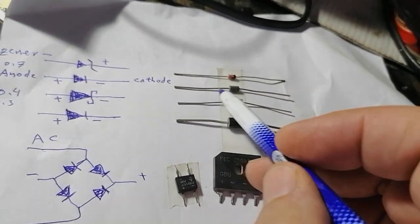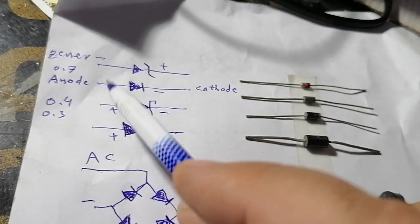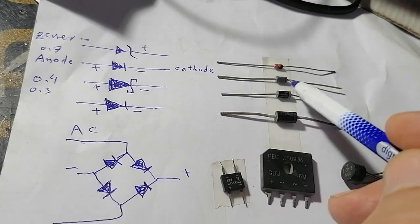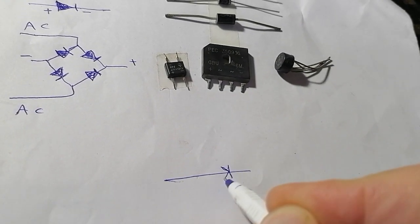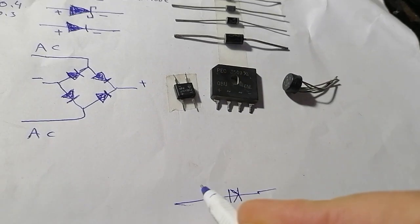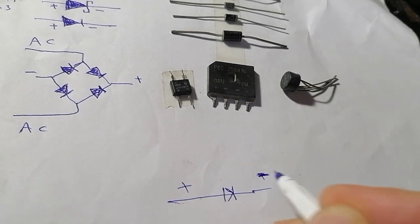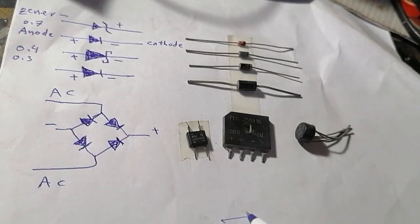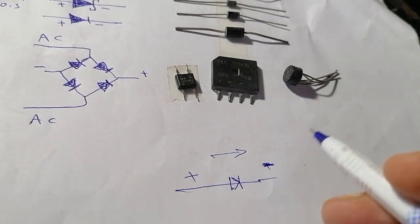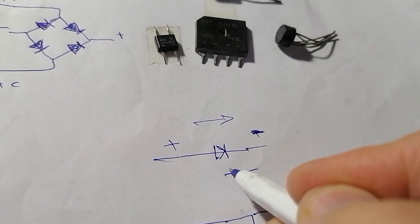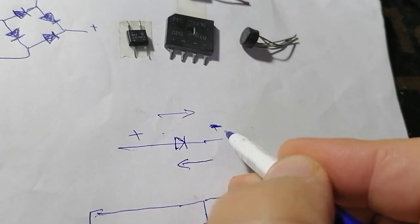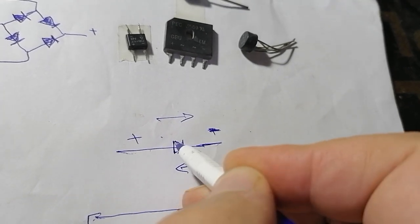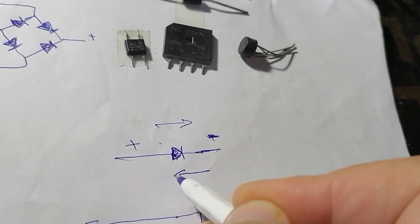Now for the germanium diode — this one. Germanium diode has an anode and a cathode. This diode will allow the current coming from this side and does not allow the current coming from that side. It allows the voltage coming from this side and does not allow the voltage coming from this side.